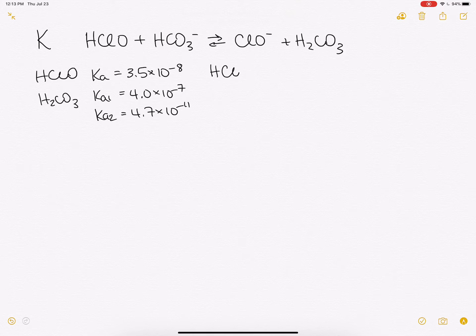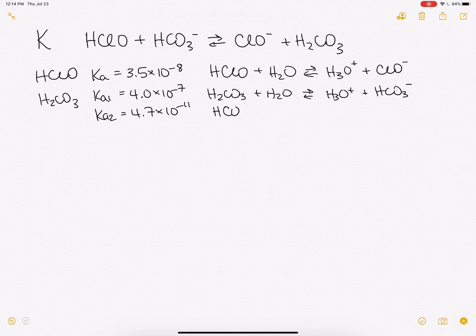and they correspond to these three reactions. The first one, HClO reacting with water, forming H3O+ and ClO-. The second one here, H2CO3 reacting with water, forming H3O+ and HCO3-. And finally, this second Ka, HCO3- plus H2O makes H3O+ and CO32-. So the question is,